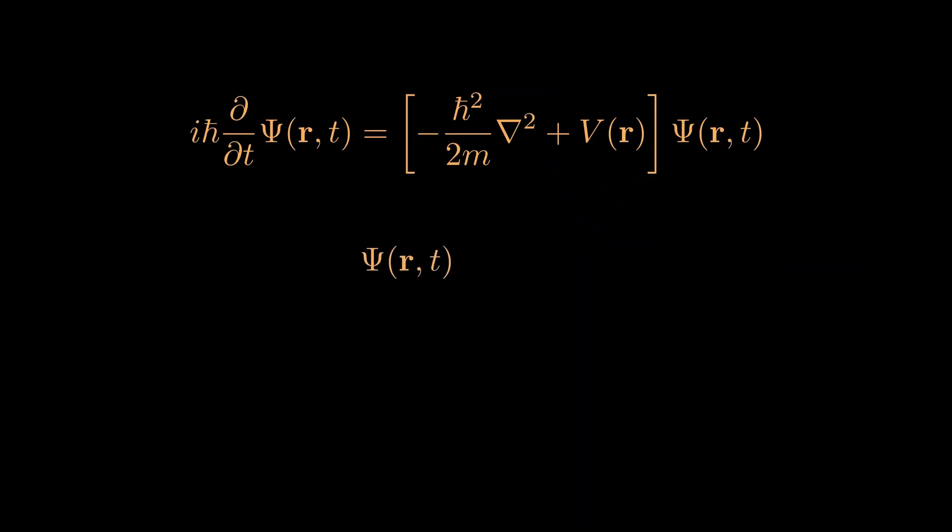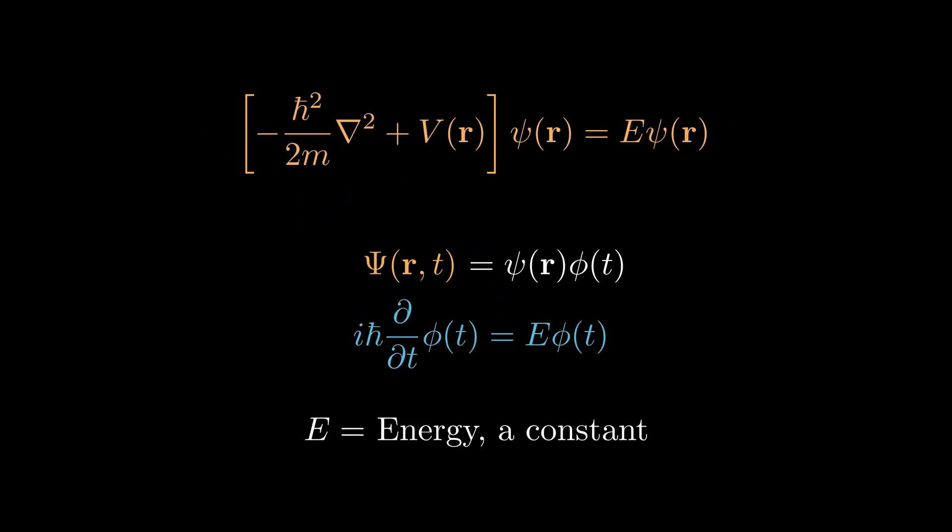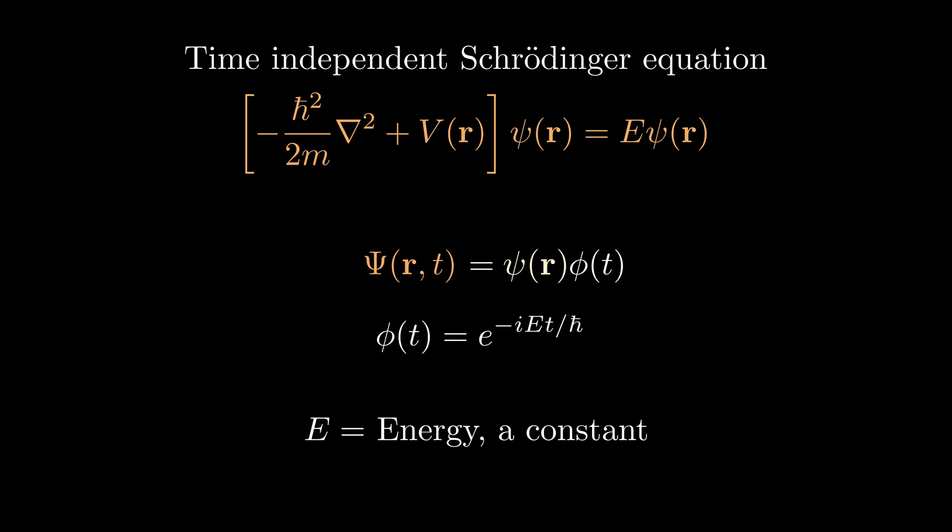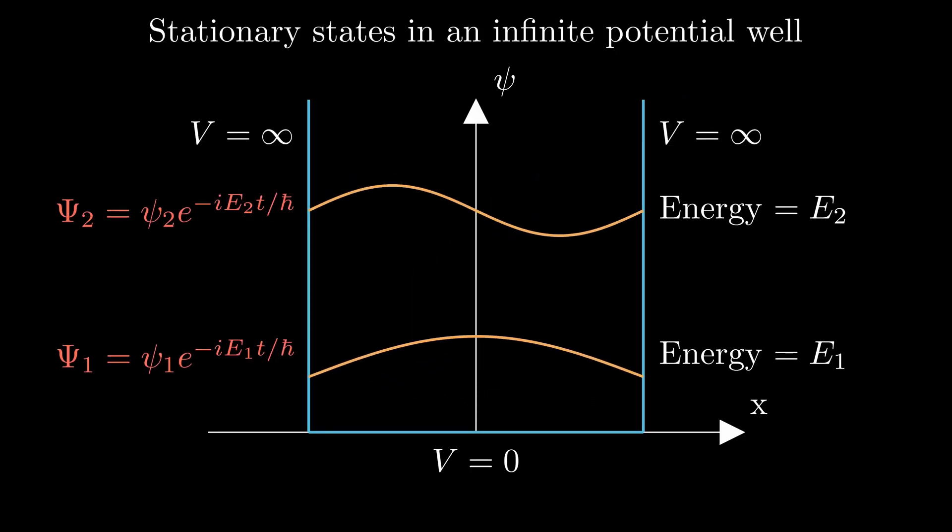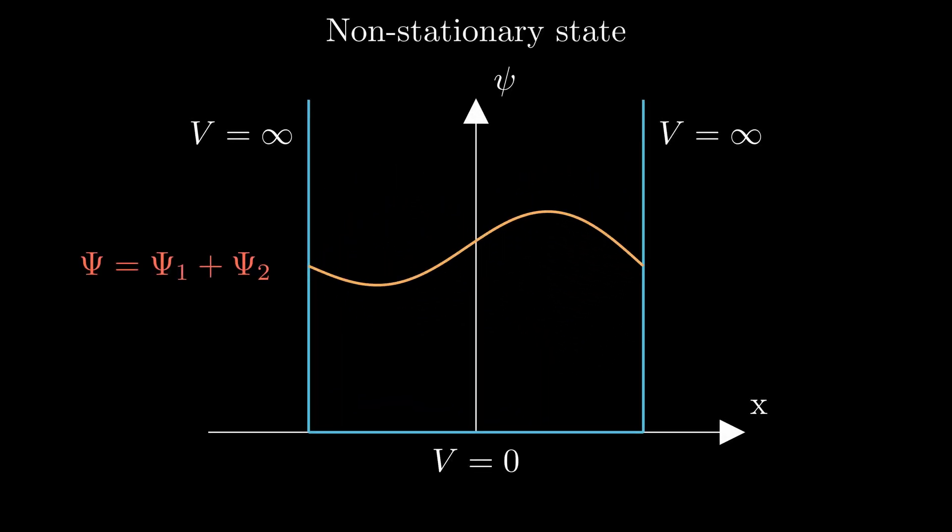The wave function can be separated into time and space dependent parts if the potential does not depend on time, yielding what is known as the time-independent Schrödinger equation. The solutions of the time-independent Schrödinger equation coupled to the time-dependent phase factors are known as the stationary states, eigenstates, or states of definite energy. The stationary states are the separable solutions of the time-dependent Schrödinger equation. But not all solutions of the time-dependent Schrödinger equation are stationary states.